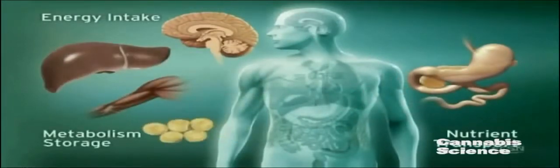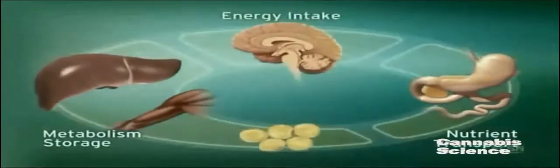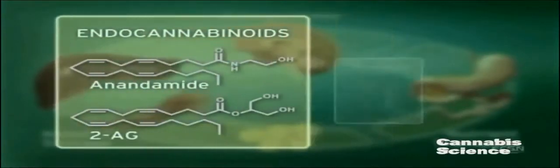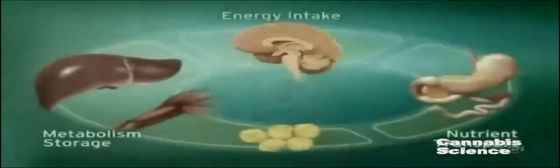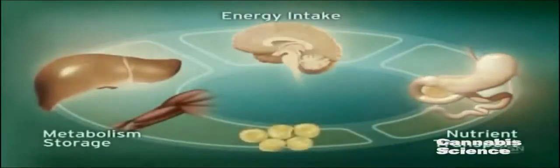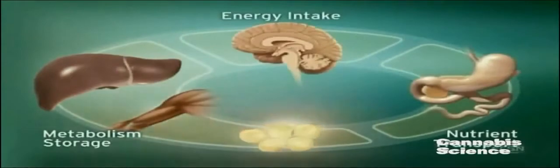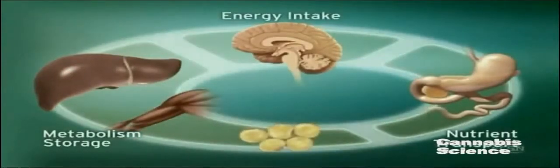The ECS regulates these processes through endogenous ligands such as anandamide and 2-arachidonyl glycerol, and the CB1 receptor. CB1 receptors are located in the brain, digestive tract, muscle, and adipose tissue. Integration of these central and peripheral ECS components is achieved through neuronal and hormonal signaling.